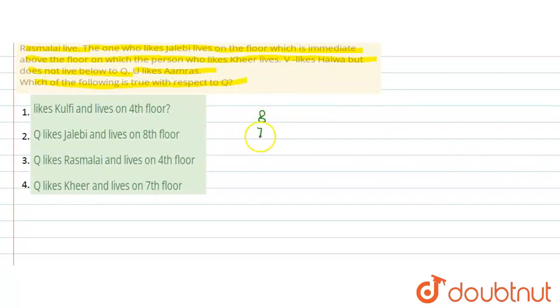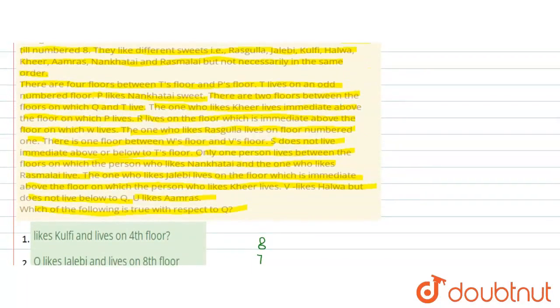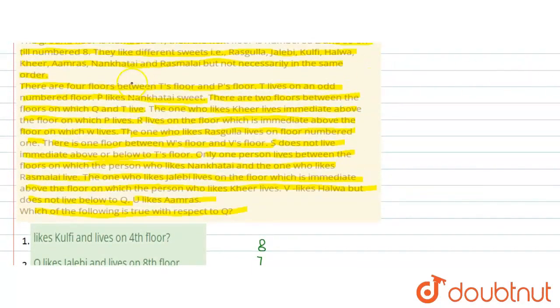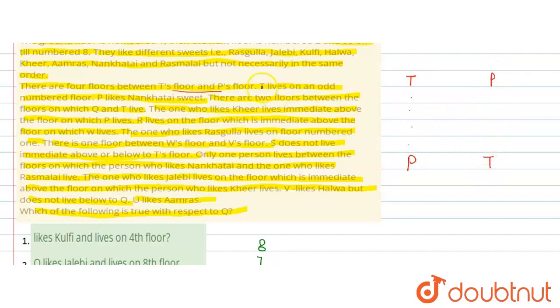So, here we start with the numbering: floor number 8, 7, 6, 5, 4, 3, 2 and 1. The condition says 4 floors between T and P. T lives on an odd number floor — that means T can be on floor 1, 3, 5 or 7. If T is on floor 1, then counting 1, 2, 3, 4 — P comes on floor 5. If P is here then T is here, or if P is here then T is here.